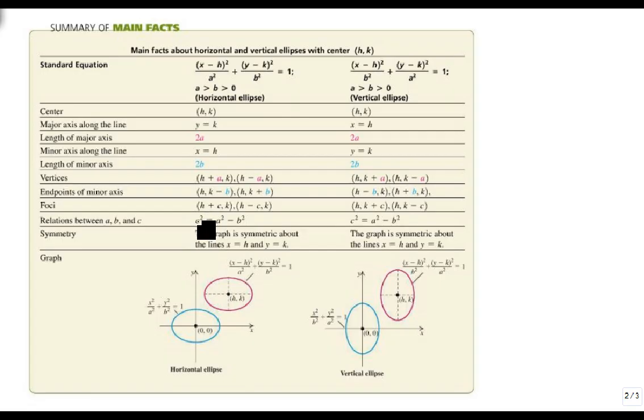And we still get a c equation, so we're going to change to c squared equals a squared minus b squared. So it's the bigger one minus the smaller one, and that just moves our graph, what we had before, just moves somewhere else.